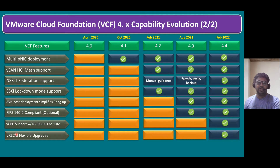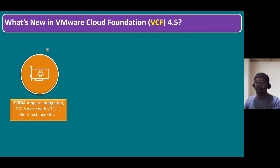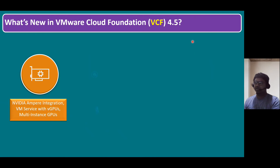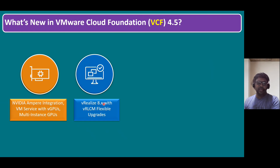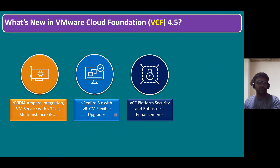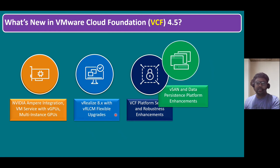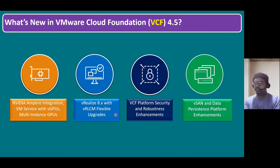Now let's talk about what's new in VMware Cloud Foundation version 4.5. The major enhancements are: first, NVIDIA AI Enterprise integration and virtual machine service with vGPU — graphical processing units used for video analytics, AI, and machine learning applications, with support for multi-instance GPUs. Second, vRealize 8.x starting from 8.6 and later, with VELCM flexible upgrades. Third, VCF platform security and robustness enhancements. Fourth, vSAN and data persistent platform enhancements.